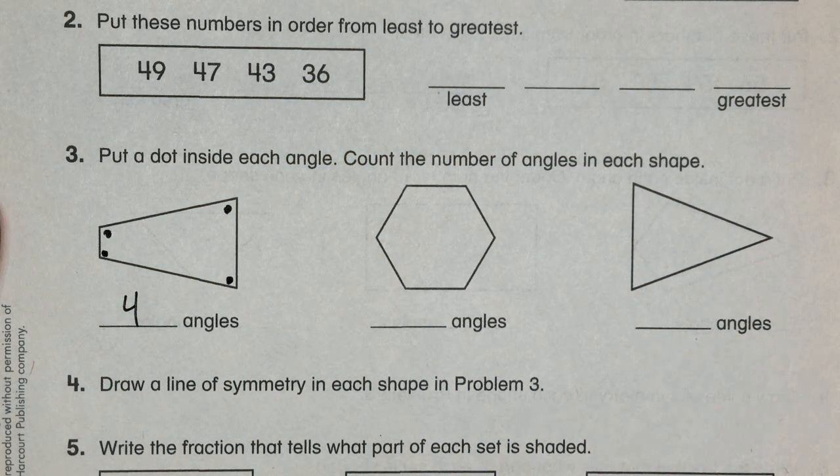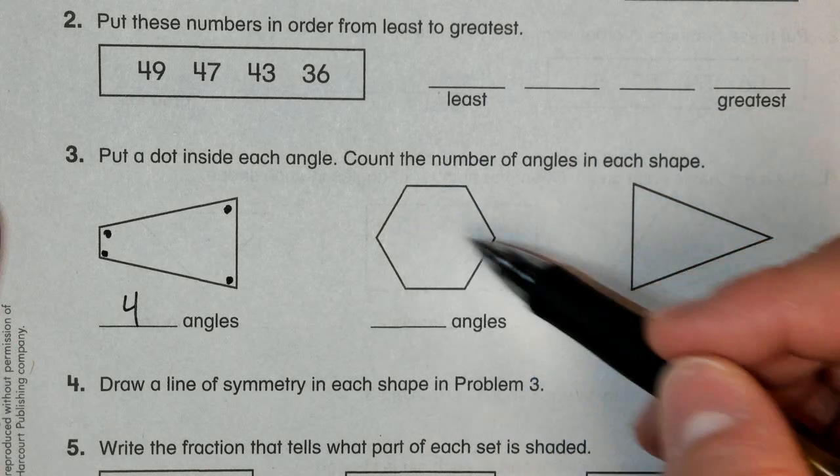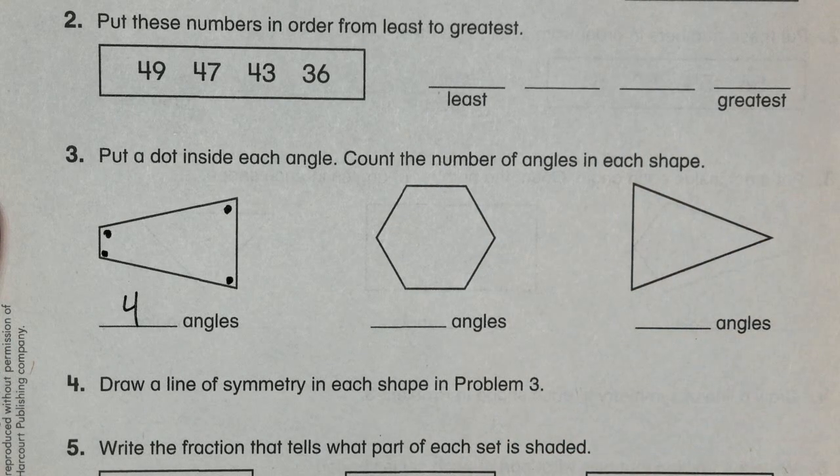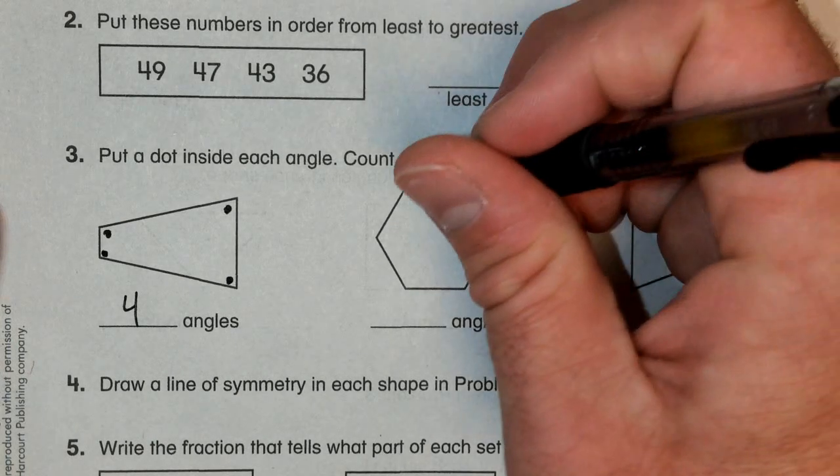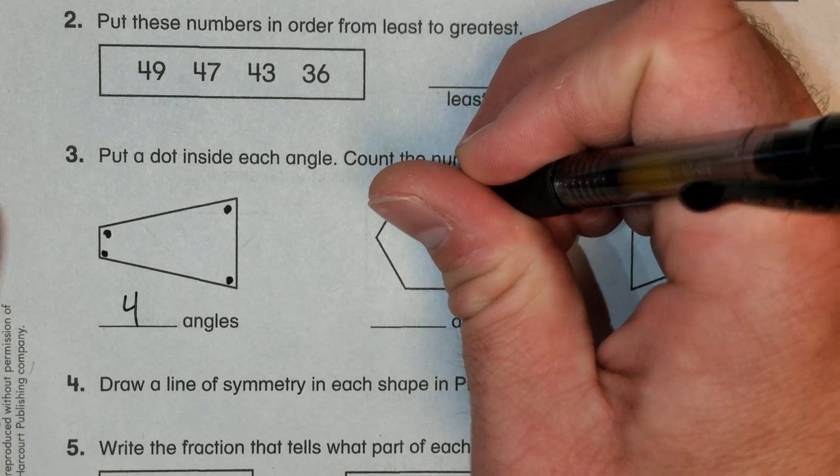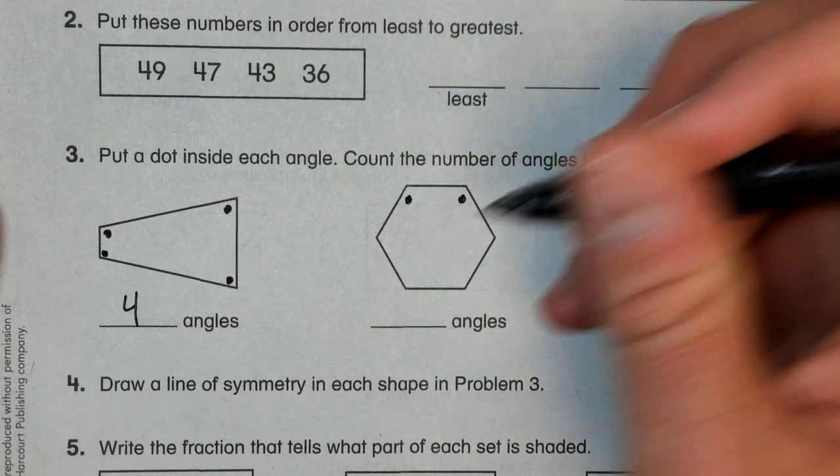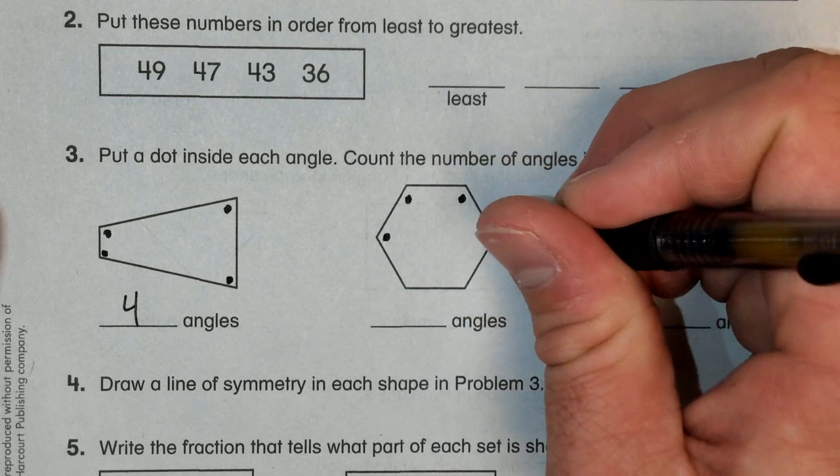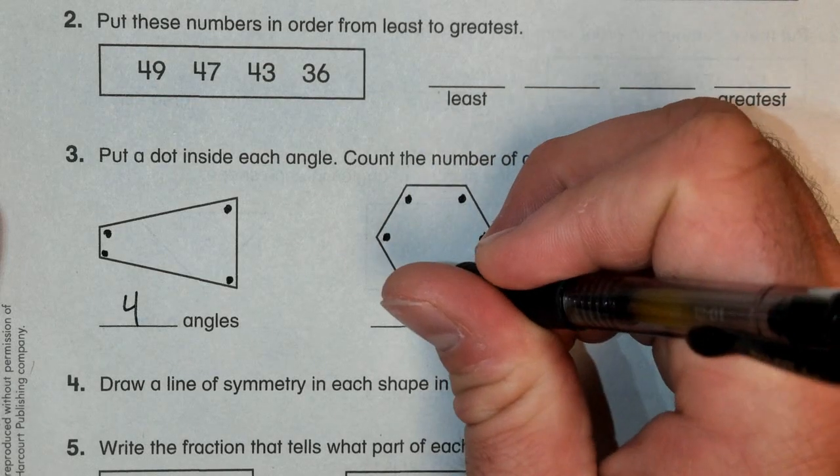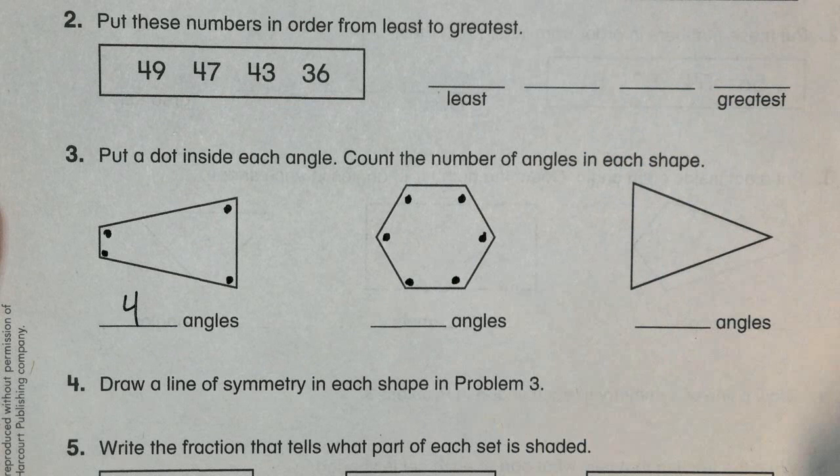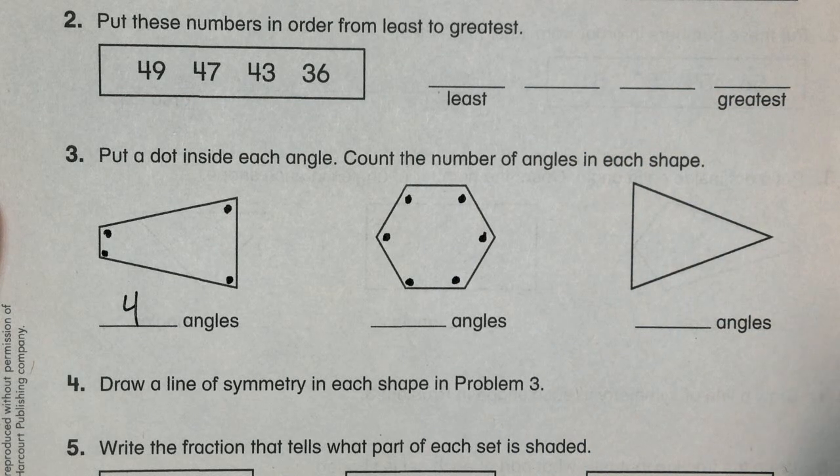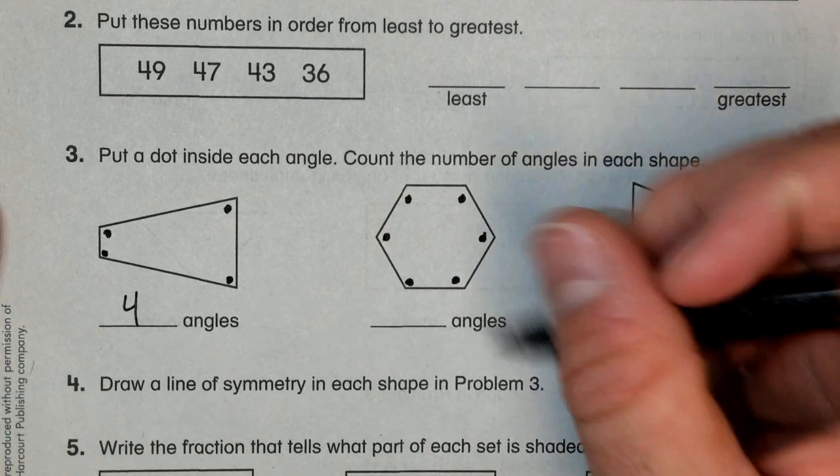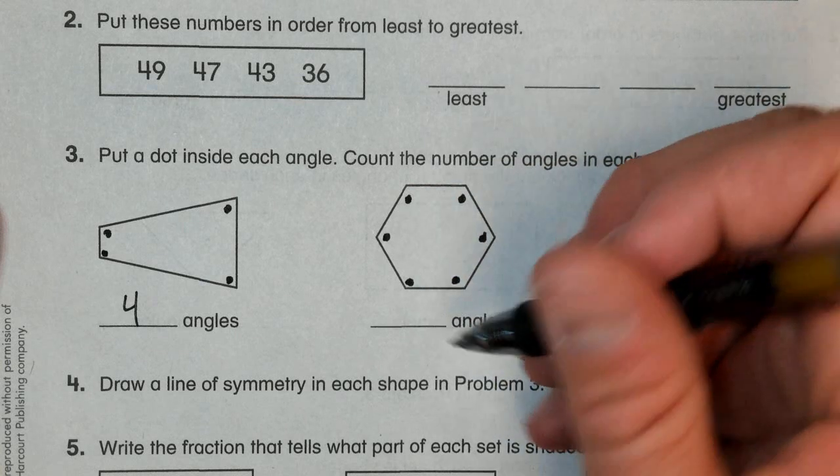Our second shape has one, two, three, four, five, six angles. So what I would do is put a dot inside each angle. And it's going to have six angles. One, two, three, four, five, six.